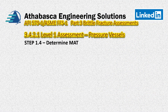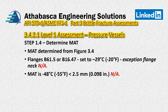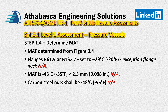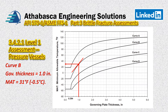Step 1.4 — determine our MAT. We go again to Figure 3.4 as API reminds us. We don't have flanges, so the flange exemption curves are not applicable in our case. If the part is very thin, we can get automatic credit to minus 48 degrees centigrade or minus 55 Fahrenheit. With our thickness of 1 inch, we go all the way up to Curve B, then read across to get our MAT: 31 degrees Fahrenheit or minus 0.5 degrees centigrade. A metric version of this curve is also available.